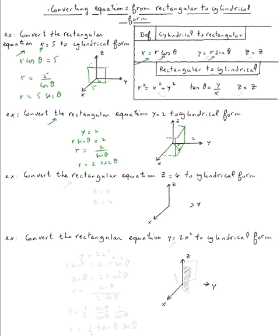Alright, next one will be convert the rectangular equation z equals four. Now remember z is just equal z. z is equal z. So nothing changed. So it's still the same. z equal four is in a rectangular form and is also in cylindrical form.